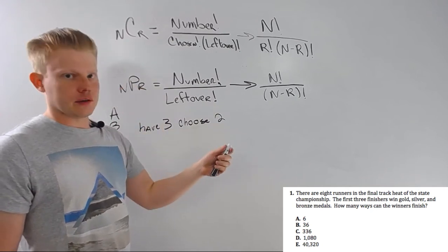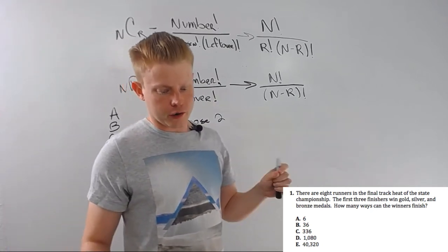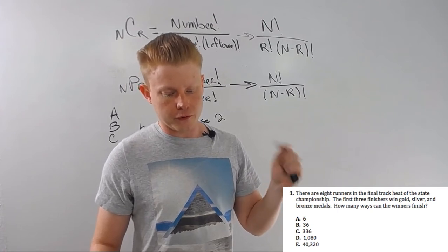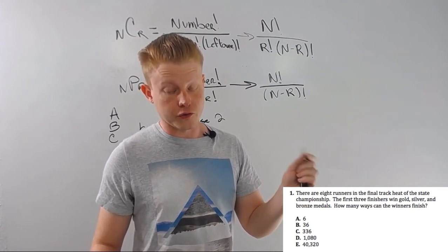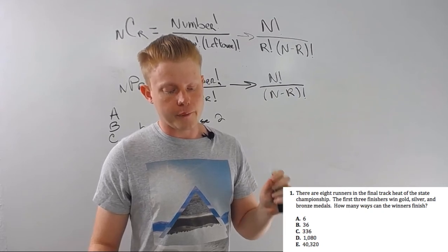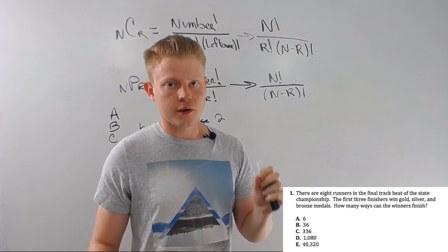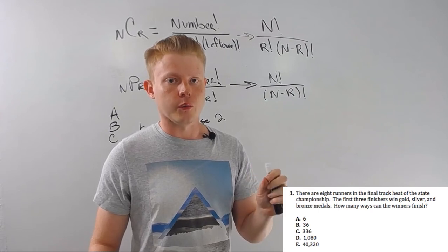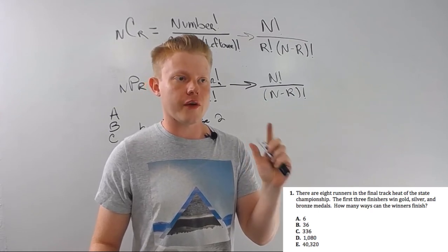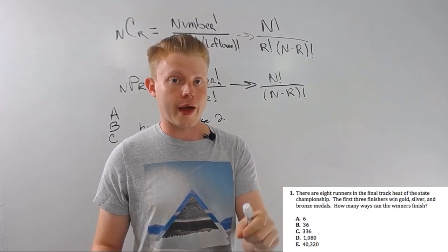Let's take a look at the problem at the bottom of the screen. There are eight runners in the final track heat of a state championship. The first three finishers win gold, silver, and bronze. How many ways can the winners finish? Basically, you have 8, you're selecting 3, and order matters.